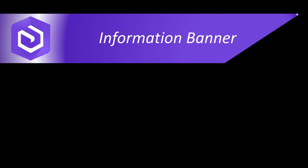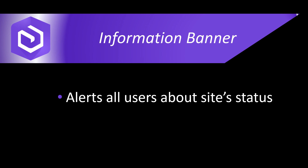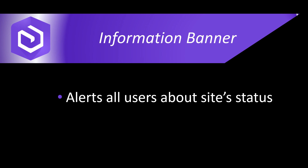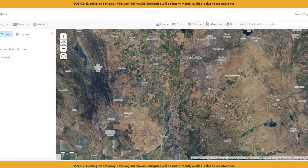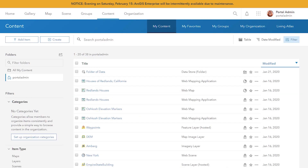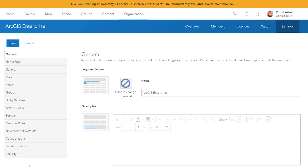Another great feature in 10.8 is the Information Banner. The Information Banner alerts all users who access your organization about your site's status and content. The banner is shown at the top and bottom of the site in the following locations: home, gallery, map viewer, scene viewer, groups, content, and the organization pages.